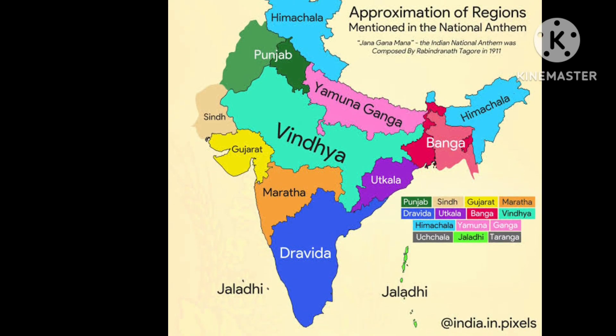This is an approximation of regions mentioned in the national anthem. The national anthem was written by Rabindranath Tagore in 1911. These states and regions are mentioned in it. There is Himachal, Punjab — and some parts of Pakistan are also there because at that time Pakistan was also part of India. The anthem mentions Punjab, Sindh, Gujarat, Maratha, Dravid, Utkala, Ganga, Vindhya, Himachal, Yamuna, and Ganga.